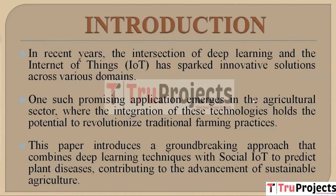In the past few years, the convergence of deep learning and the Internet of Things have given rise to innovative solutions. A specially promising application is seen in the agriculture industry, where the amalgamation of these technologies has the capacity to transform conventional farming methods.